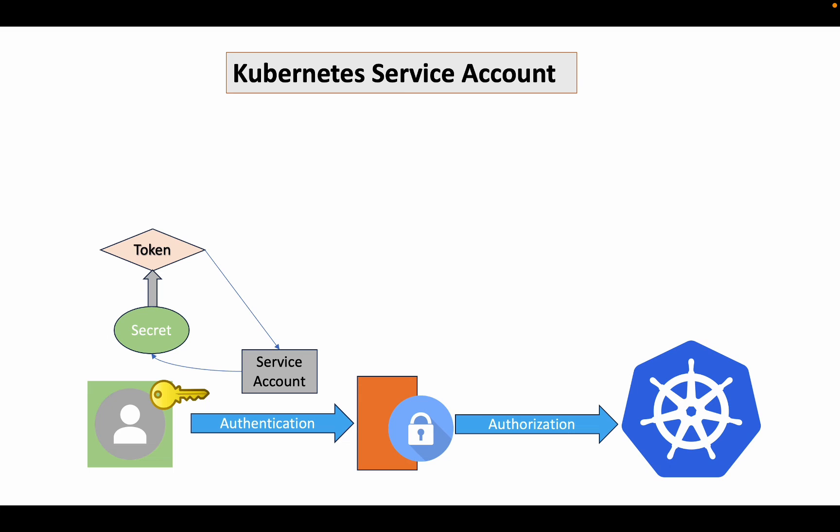Is authentication enough? No — the resource needs to be authorized as well. That's where the role or cluster role comes into the picture. The role or cluster role represents a set of permissions to access Kubernetes resources, such as get, watch, list, etc. In Kubernetes, these are called verbs.